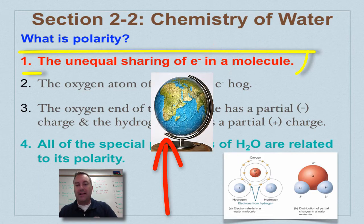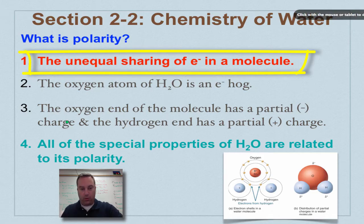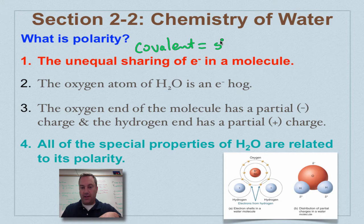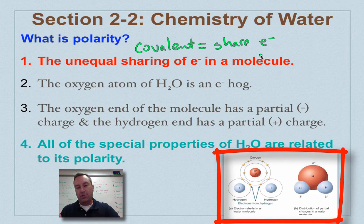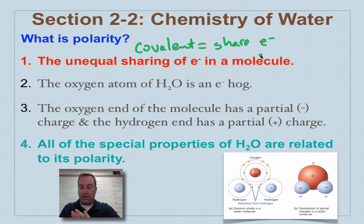Well, it's polar because it has an unequal sharing of electrons. Now, I want you to remember that water is a covalent compound. And covalent simply means that you share electrons. So what's happening is oxygen and hydrogen are sharing electrons to make their outer levels of their electron cloud full.